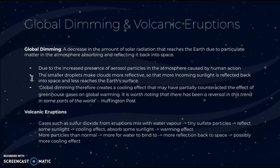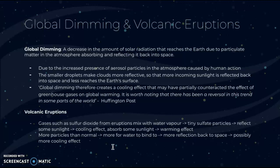As noted in the Huffington Post: global dimming creates a cooling effect that may have partially counteracted the effect of greenhouse gases on global warming. It is worth noting that there has been a reversal in this trend in some parts of the world. In terms of volcanic eruptions, gases such as sulfur dioxide mix with water vapor to create tiny sulfate particles in the atmosphere. These reflect some sunlight — creating a cooling effect — but also absorb some sunlight, contributing to warming. With more particles than normal, there is more surface for water to bind to, meaning more particles to reflect heat back into space, suggesting more cooling than warming, though trends vary across the world.